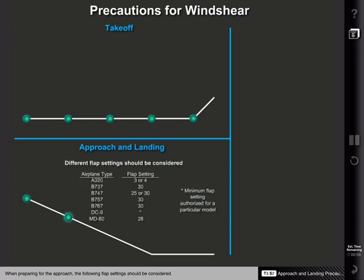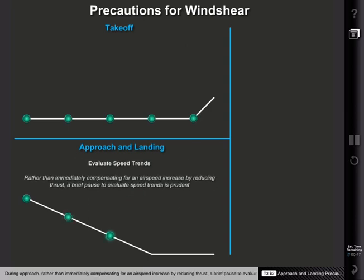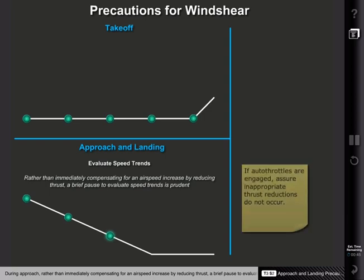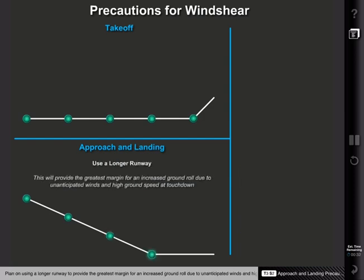When preparing for the approach, the following flap settings should be considered. During approach, rather than immediately compensating for an airspeed increase by reducing thrust, a brief pause to evaluate speed trends is prudent. Plan on using a longer runway to provide the greatest margin for an increased ground roll due to unanticipated winds and high ground speed at touchdown.